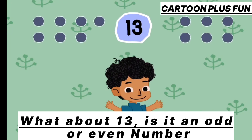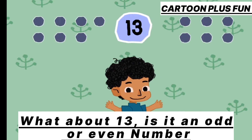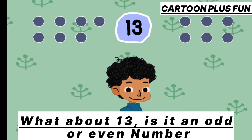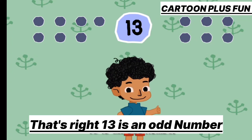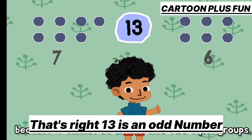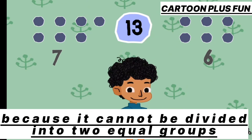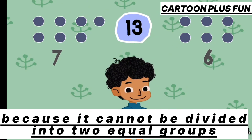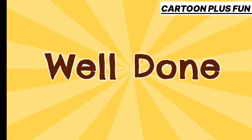What about 13? Is it an odd or even number? That's right! 13 is an odd number because it cannot be divided into 2 equal groups. Well done!